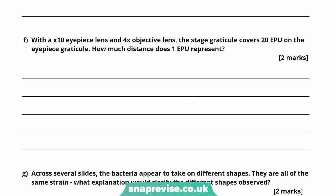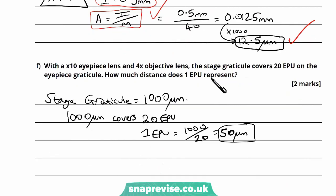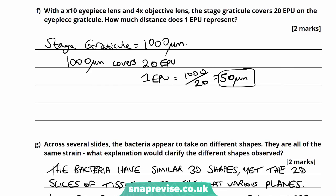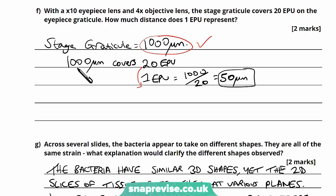Part F says: with a times 10 eyepiece lens and a times 4 objective lens, the stage graticule covers 20 eyepiece units on the eyepiece graticule. How much distance does one EPU represent? This is a typical graticule question worth two marks. The stage graticule is always 1000 micrometers — assume this if not stated. 1000 micrometers covers 20 EPUs, so dividing both by 20: 1000 divided by 20 is 50. Therefore, one eyepiece unit represents 50 micrometers.